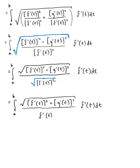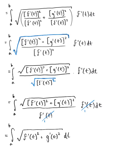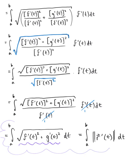The f'(t) in the numerator and denominator cancel, leaving us with the definite integral from a to b of the square root of f'(t) squared plus g'(t) squared, dt. This integrand is the magnitude of your tangent vector, so we can rewrite this as the definite integral from a to b of the magnitude of the tangent vector for our parametrized curve. This is the arc length formula in R2, specific to the plane.